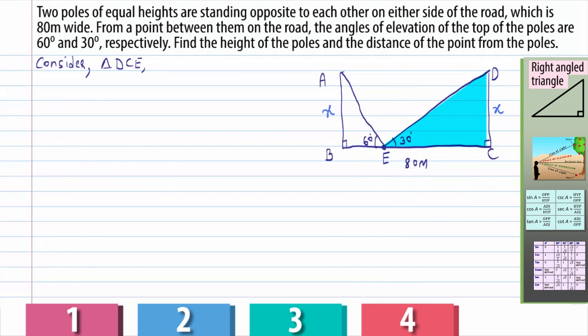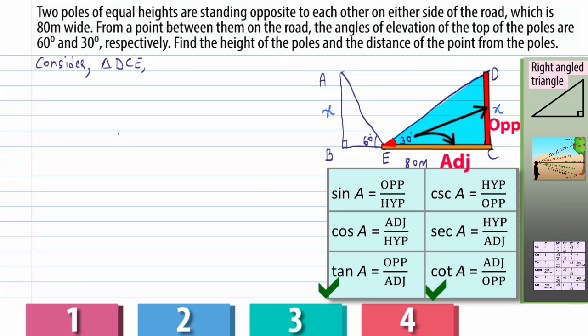this time I will consider the right angle triangle DCE. Again, in this triangle DCE, if I observe, the things that I need to find out, DC and EC, they are the opposite and adjacent sides for the angle 30 degrees. So again, I can either use tan or cot.